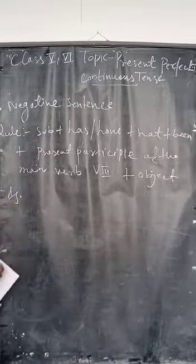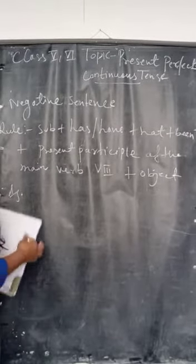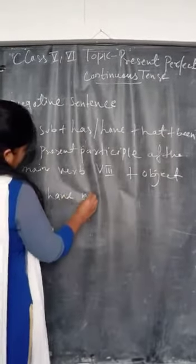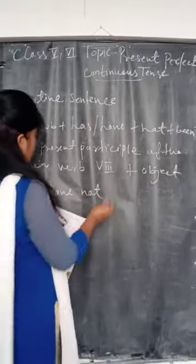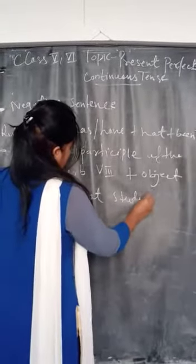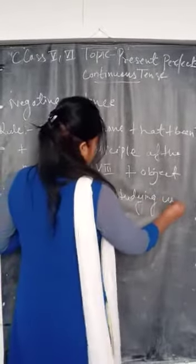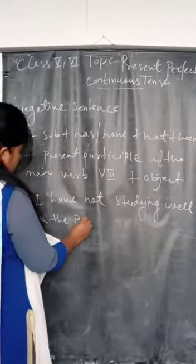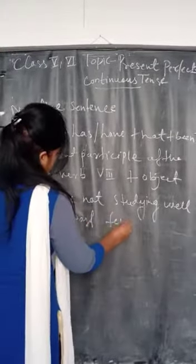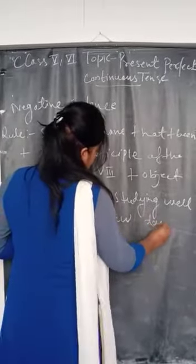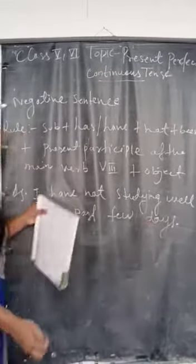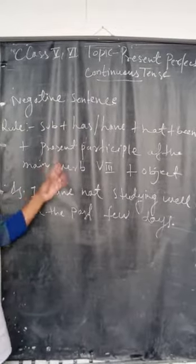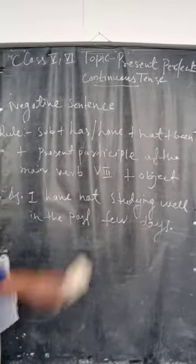Here is an example of Present Perfect Continuous Tense in negative form: 'I have not studied well in the past few days.' That covers the negative sentence in Present Perfect Continuous Tense. I hope you all understand.